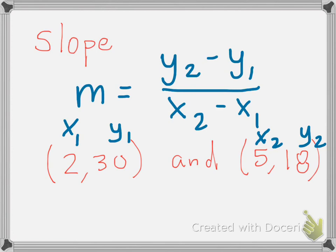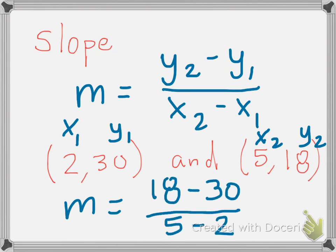y1, x2, and y2 come from these points. Plug it in to find your slope: 18 minus 30 over 5 minus 2. Figure out what that number is, you get negative 4.